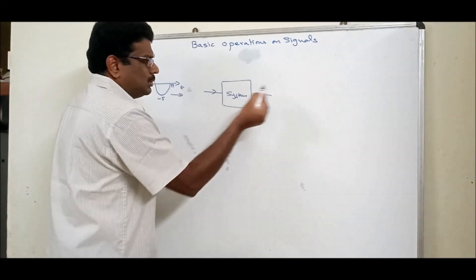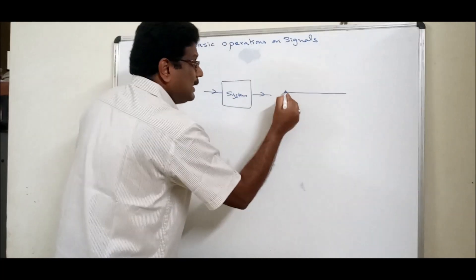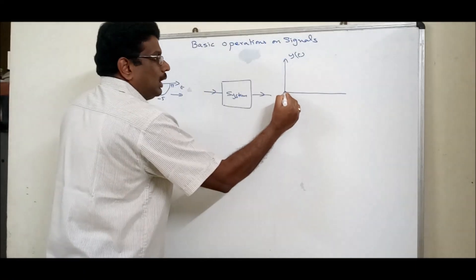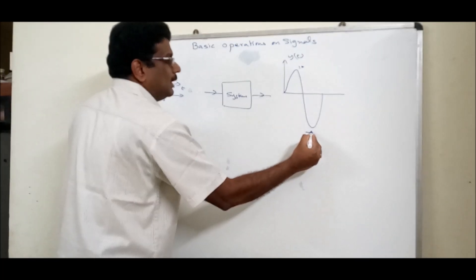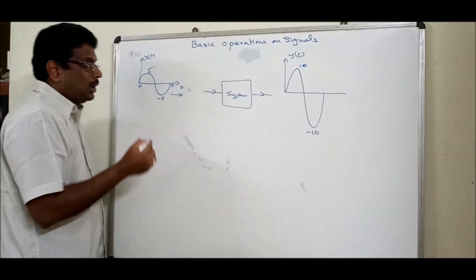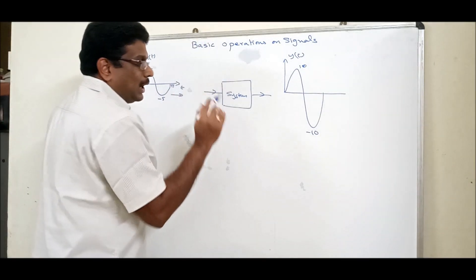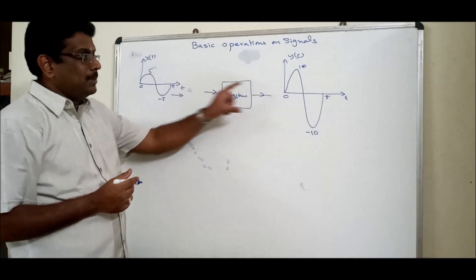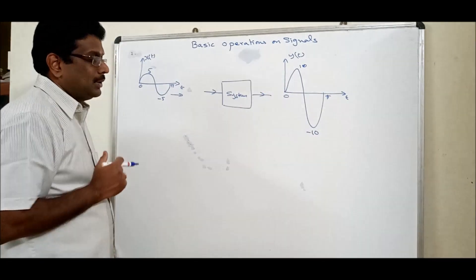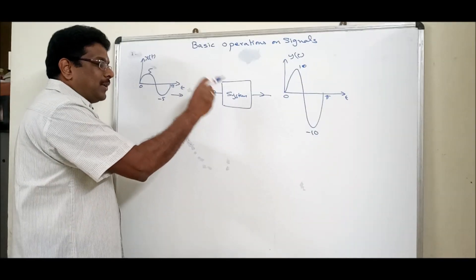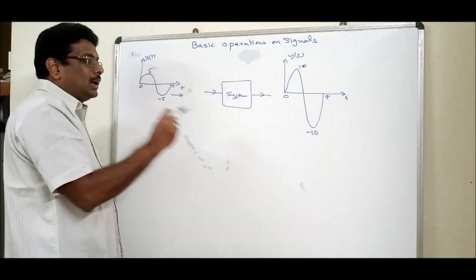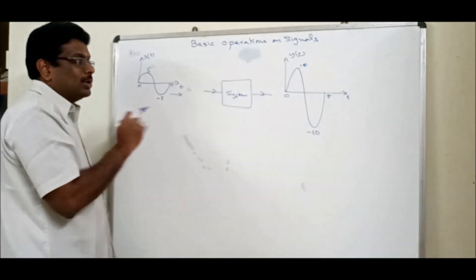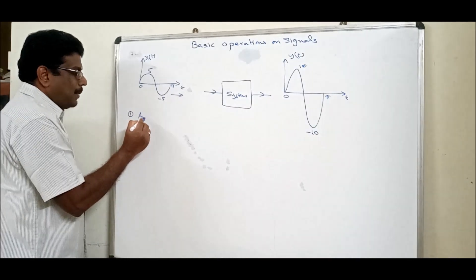What may be the output? It depends on the circuit. If the output y(t) is twice the amplitude of the input signal, the amplitude 5 becomes 10. So I can say the system is performing one operation — and that operation is on amplitude. This operation is called amplitude operation.